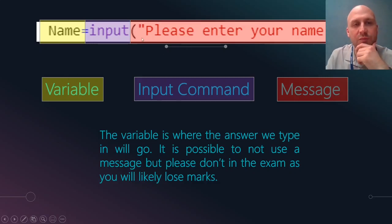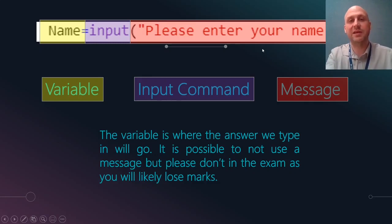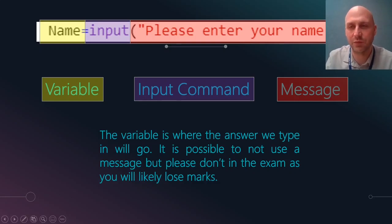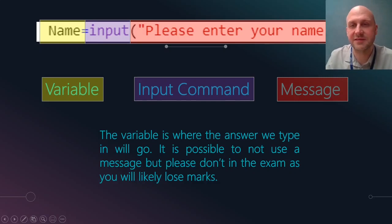So three parts: variable, input, bracket. Where the quotes are and there's a message, you could put a variable that you've made yourself — so let's say you had 'please enter your name' stored in the variable input_message, then you can use variables there, but very rarely will that be important. Just remember it like this. This is the same in pseudocode as it is in Python — exactly the same.